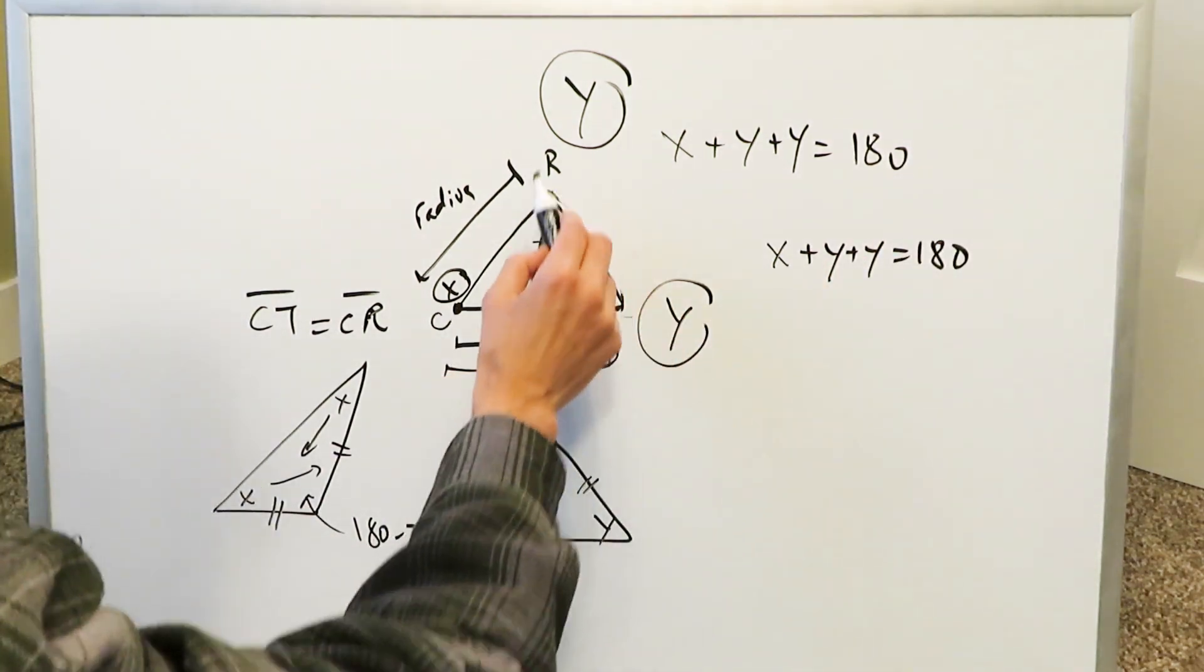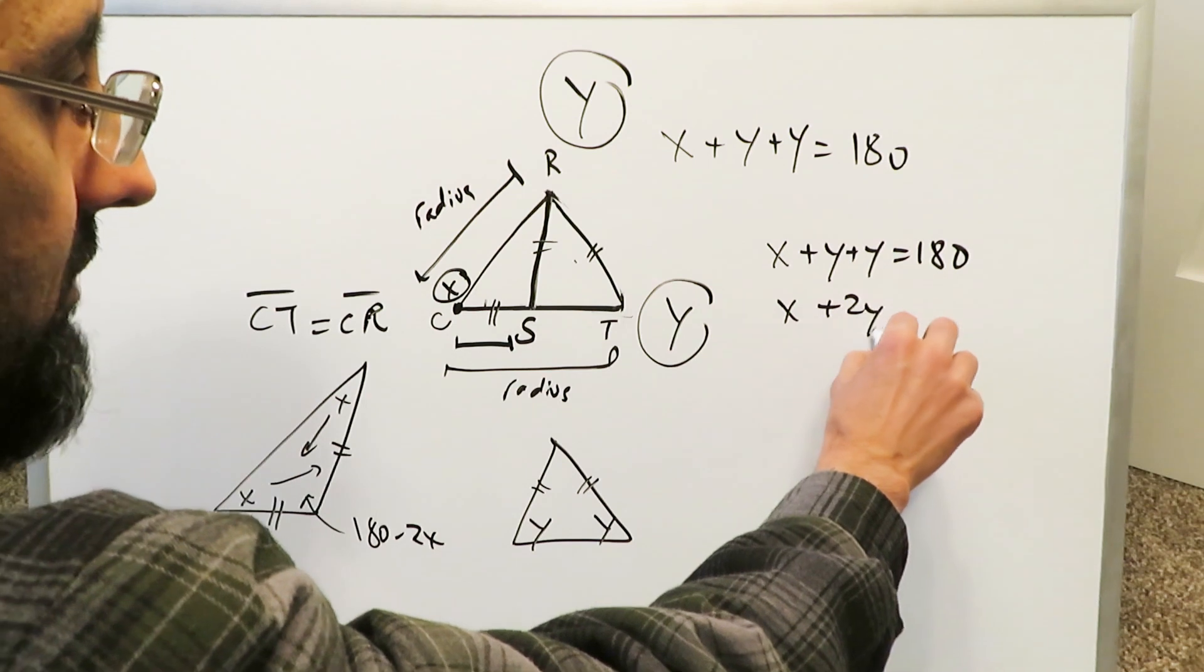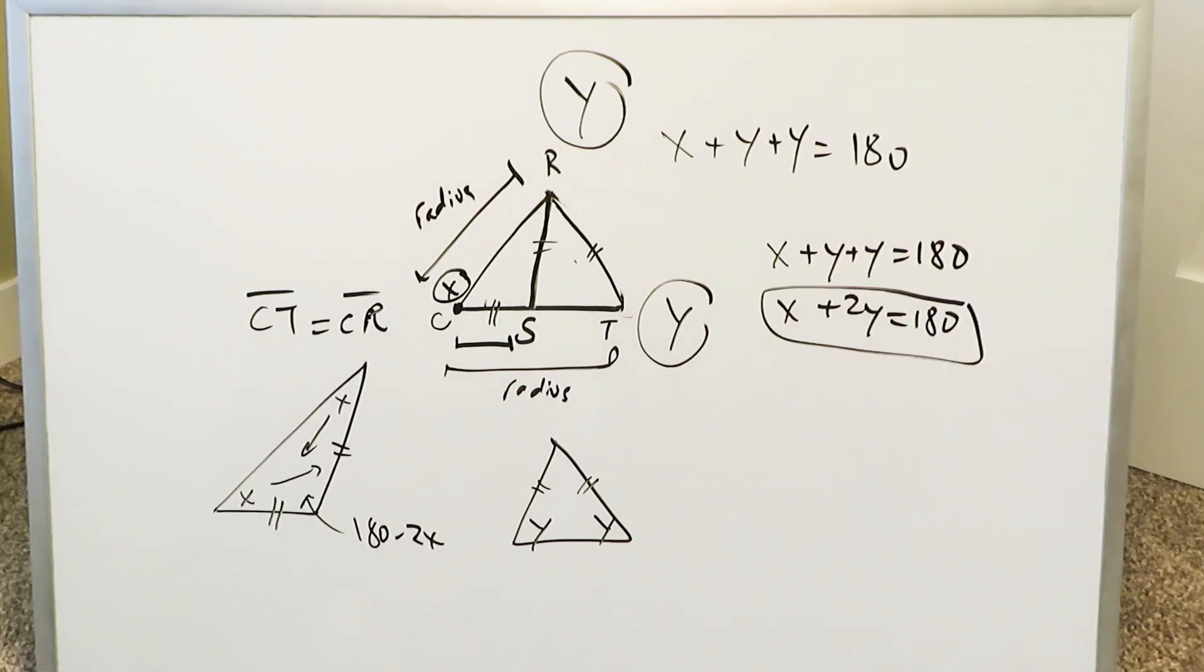This large triangle representation, X plus Y plus Y equals 180 or X plus 2Y equals 180. And let that be one equation in terms of linear for the system of equations we will develop.